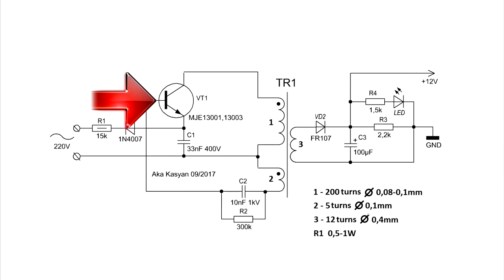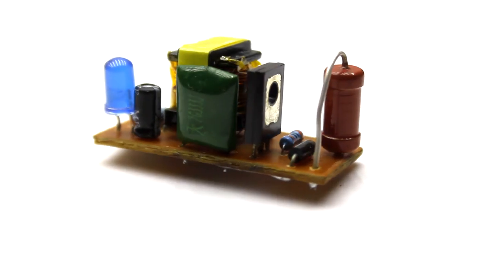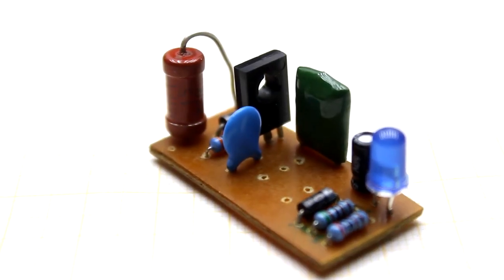A power transistor is a low power, high voltage bipolar transistor of reverse conductivity, like MJE 13001, 13003, or 13005. More powerful ones don't make sense; the first option is enough.